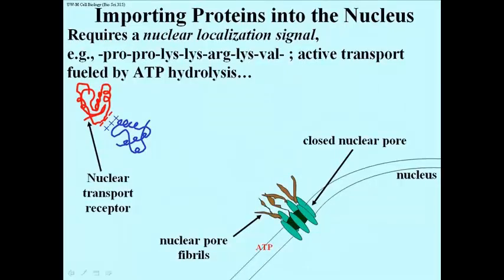That charge is shown on the left in the blue folded protein as being positively charged. That positive charge is important because it allows the protein destined for the nucleus to associate with a nuclear transport receptor, shown here in red, which has a negatively charged region that will interact with the positively charged nuclear localization signal.